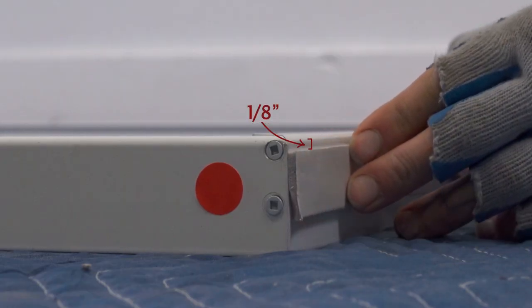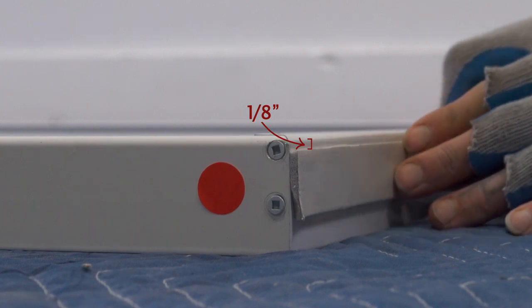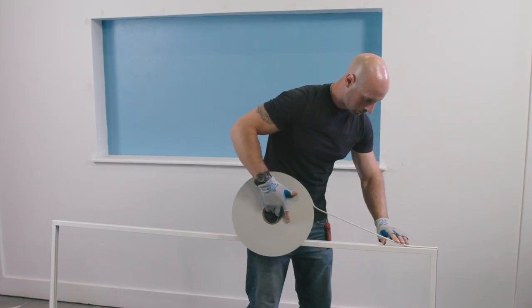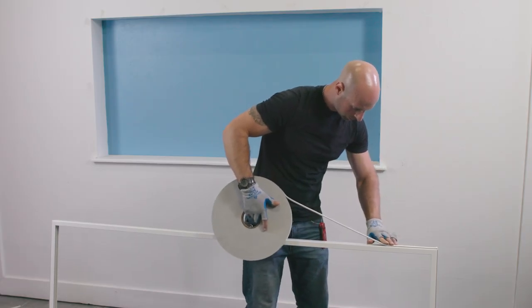First, apply the provided foam tape roughly one-eighth of an inch from the edge of the frame. You may need to apply the tape on all four sides.